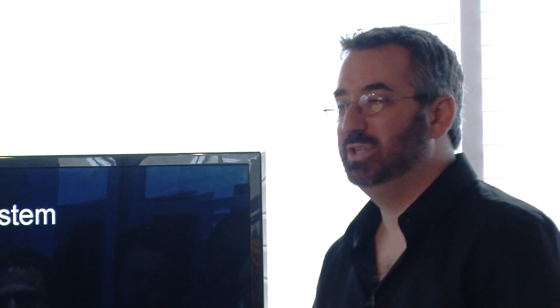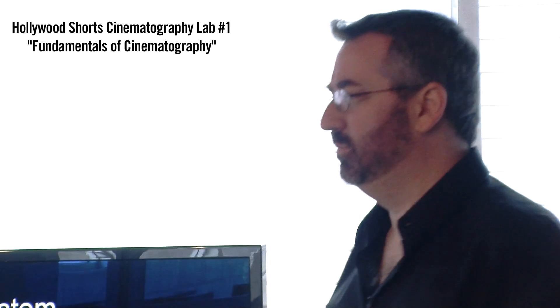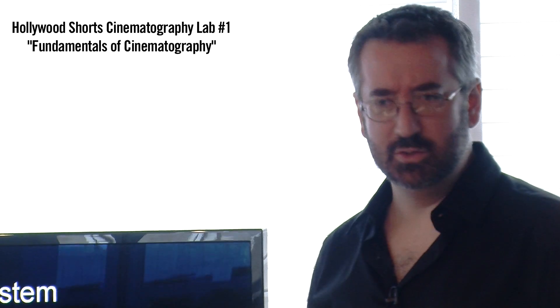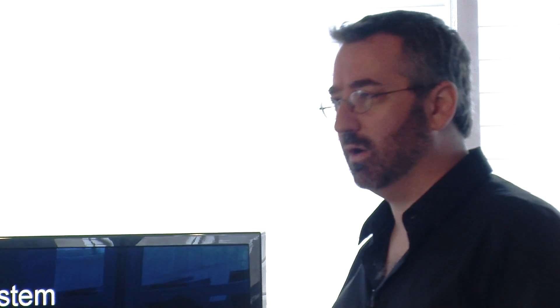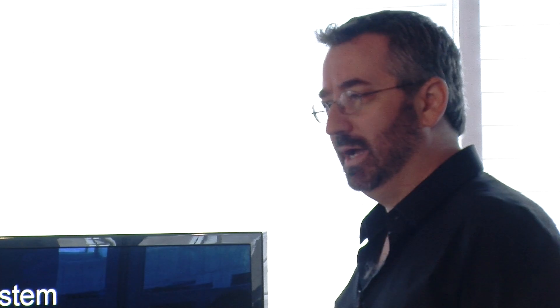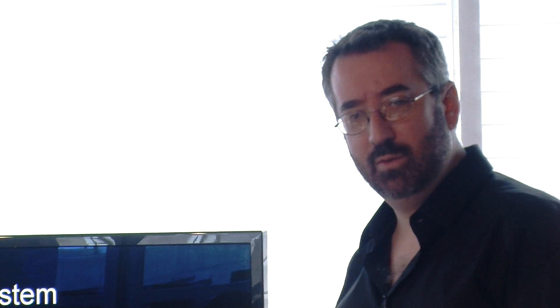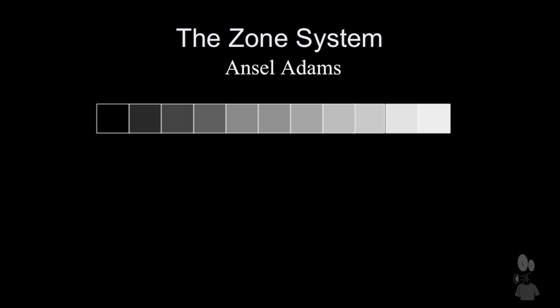Which actually kind of leads us into Ansel Adams. I'm assuming that everybody knows who he is — he's a very famous landscape photographer. He was a brilliant black-and-white photographer, and Ansel created what was called the Zone System. It's really a method of understanding exposure and defining exposure. What we're looking at in Ansel's system is an 11-step grayscale between white and black, and he identified a name for each one of these as a zone, or a number.